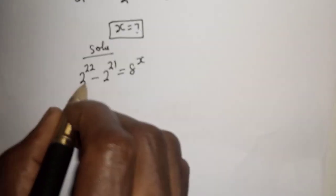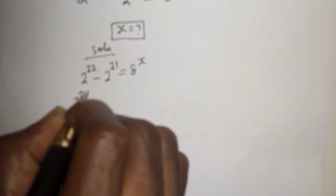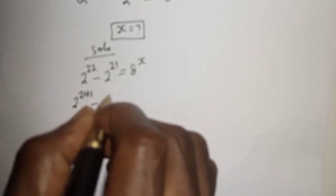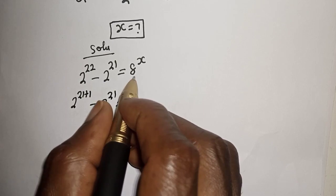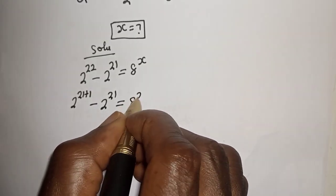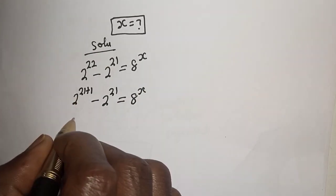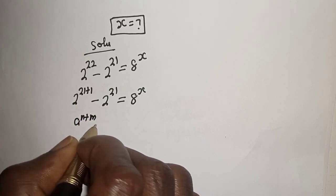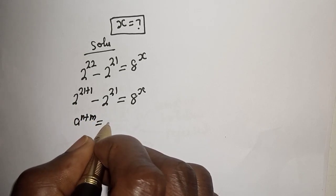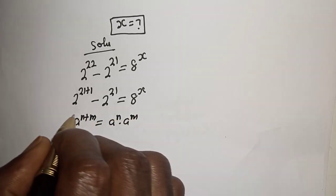Then 2 raised to power 22 can be written as 2 raised to power 21 plus 1, minus 2 raised to power 21, is equal to 8 raised to power x. Then if you have a raised to power n plus m, it is equal to a raised to power n multiplied by a raised to power m.